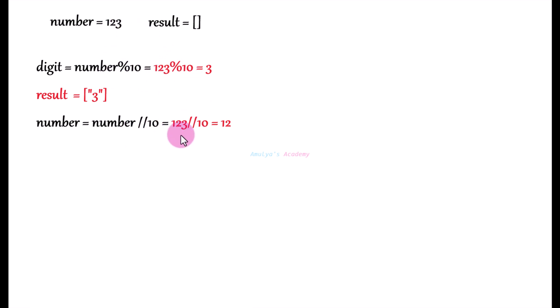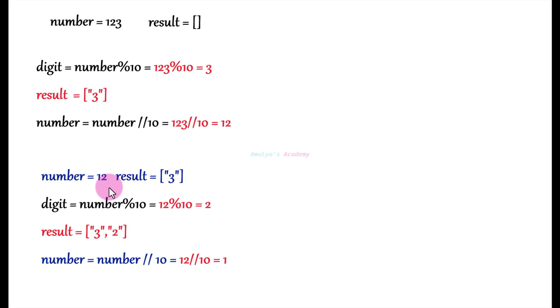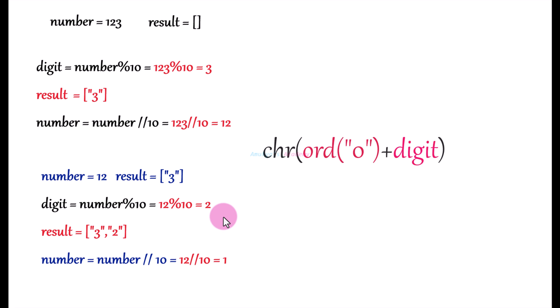Now we need to remove this digit from the number, so for that I will use integer division. We get the number as 12. For the next calculation, number is 12 and the result list contains character '3'. We perform the modulo operation again to extract the next digit and get 2. Then we convert digit 2 to a character using the same method, append it to the list, then apply division to remove that digit and get 1.